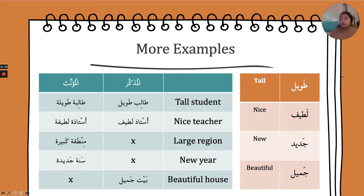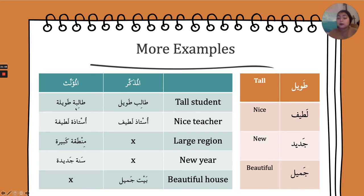Tall student: the word 'student' is a human word, so it depends on the gender of the student. Remember the noun comes first: طالب طويل — tall male student. For the feminine: طالبة طويلة — both take the feminine marker. For nice teacher: أستاذ لطيف, and the feminine is أستاذة لطيفة — both words take the ta'marboota.